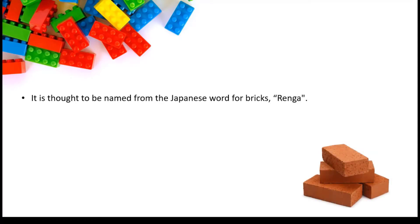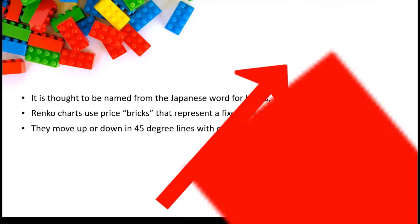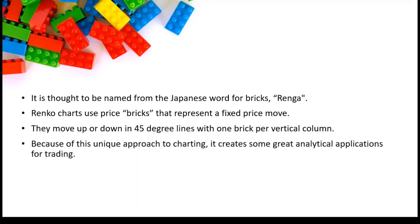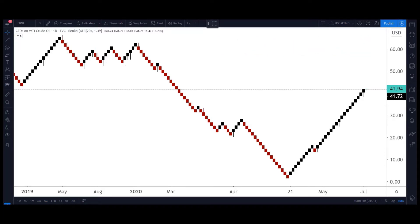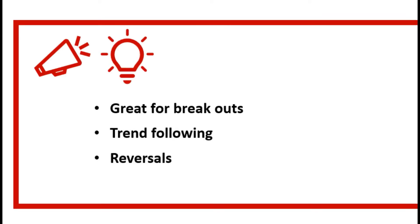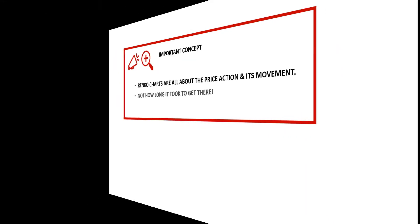Renko is thought to be named from the original Japanese word 'Renga' meaning brick. These bricks represent a fixed price move and they move up and down in 45-degree lines. Here we're looking at WTI crude oil — red bricks for down, black bricks for up price movement — giving us a nice clear direction of how the price of oil has moved, where it stops and starts, and support and resistance. Renko charts are great for four main things: breakouts, trend following, reversals, and risk and trade management. It's all about price action — its movement, not the time.